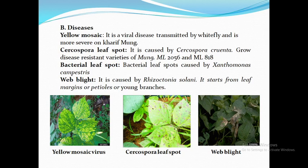Web Blight: Web blight of mung bean is caused by Rhizoctonia solani. The fungus affects all above-ground parts of the plant such as leaves, petioles, stems, and pods, but is most destructive on foliage during the second to third week of plant growth, causing seedling mortality. Seedlings are killed when lesions develop on hypocotyls.